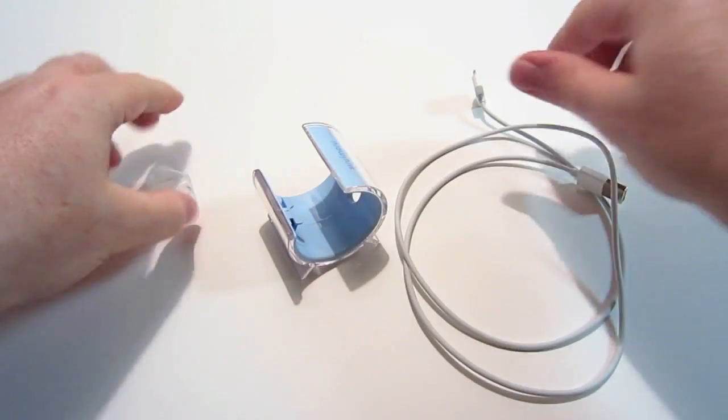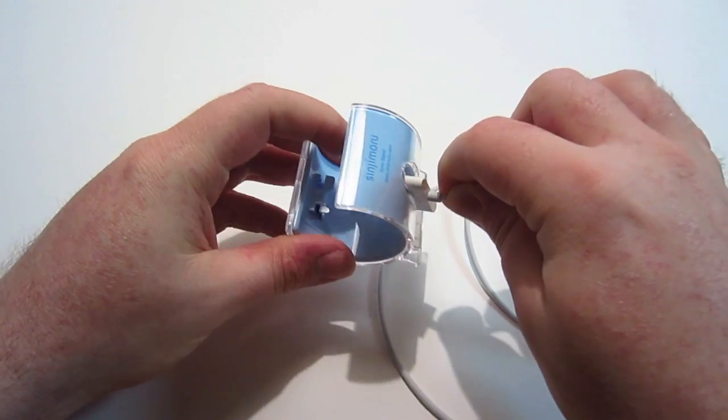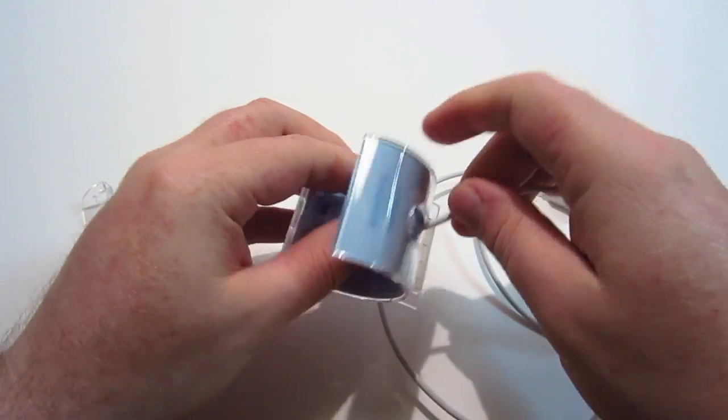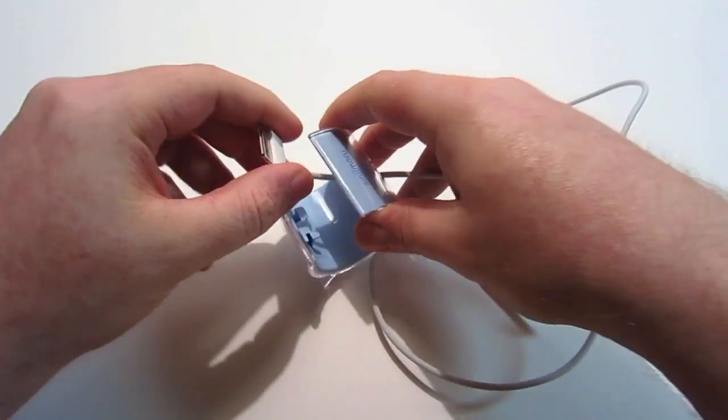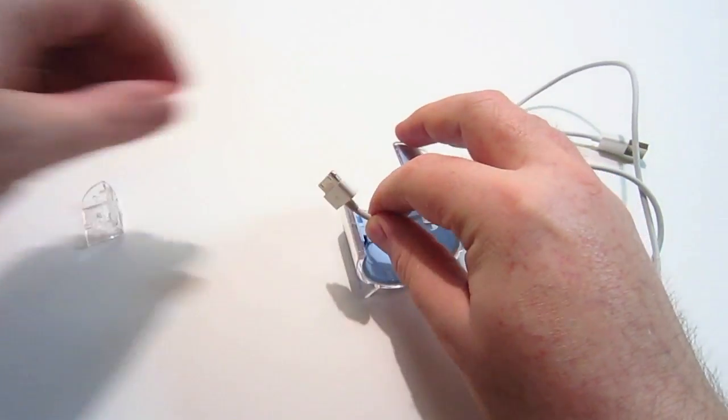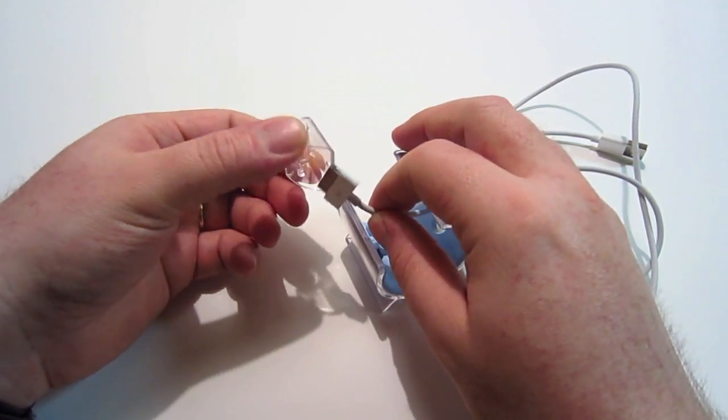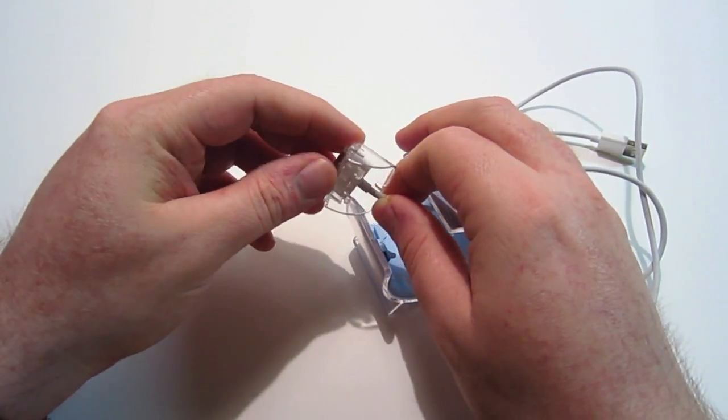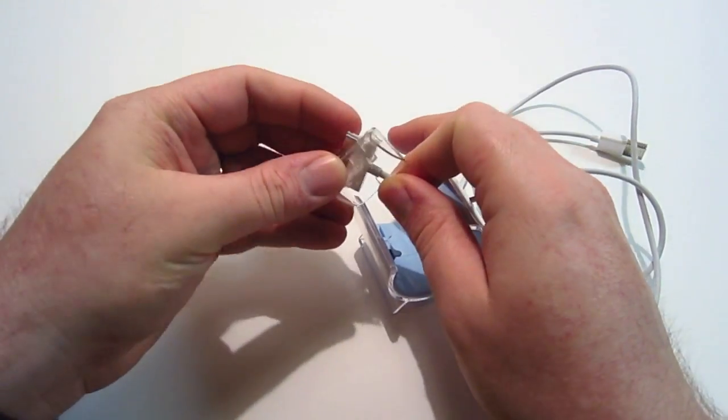You're going to take it out, take your dock connector part, insert it through the hole there. Then you're going to take the stand itself and feed it through just like so.